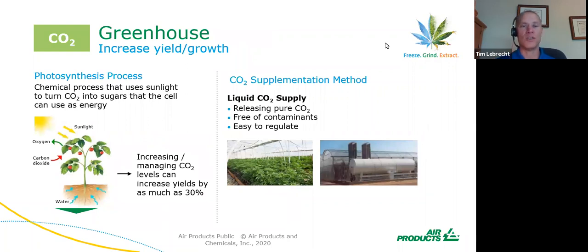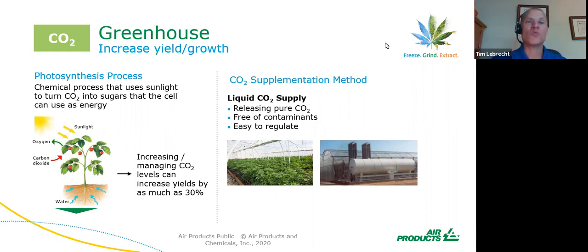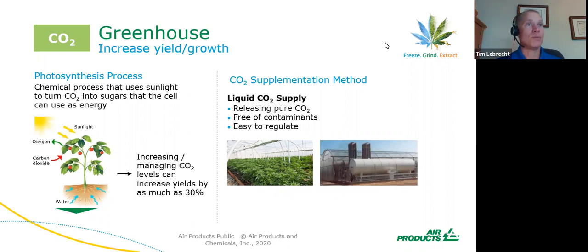Let's start early on in the growth phase. We supply CO2 to greenhouses, where it increases yield and growth. Photosynthesis is a process where plants use light to turn CO2 into sugars. Our role is CO2 supplementation — not just supplying the CO2, but working with growers on how to put it into the facility, what concentrations are safe, and what concentrations magnify growth versus hinder it or have no effect. Our technology team can help with all of that.